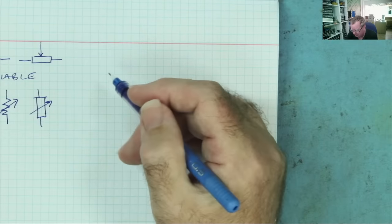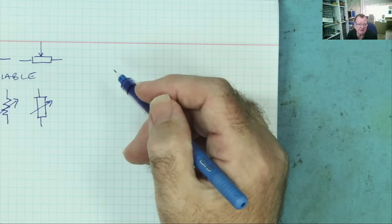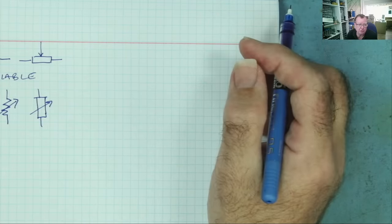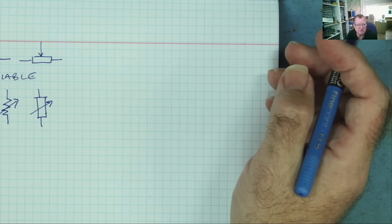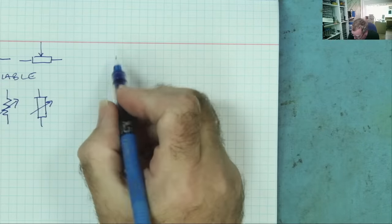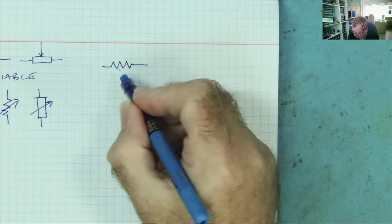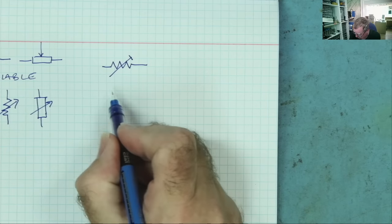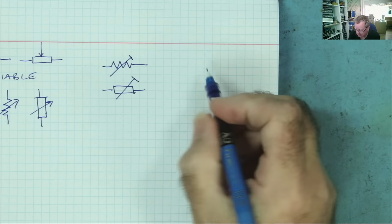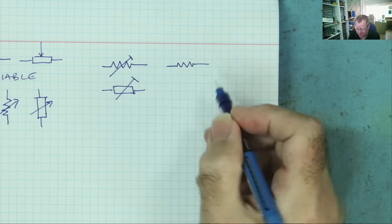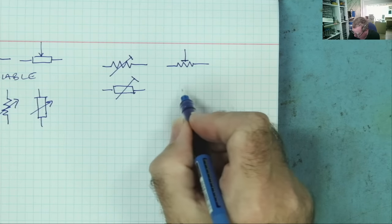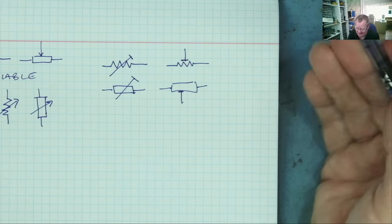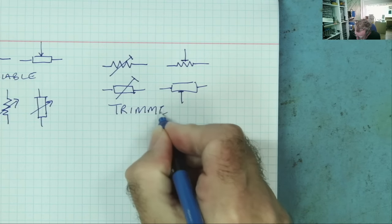There's also a variation on the variable resistor called a preset or trimmer potentiometer — trimmer pot. These are the little ones you find on circuit boards that you adjust with a screwdriver. They're not meant to be continually adjusted by the operator; they are meant for setting the circuit up and then leaving them in position. They have a similar symbol to the variable resistor — often drawn with what looks like a long letter T through it. This component is usually called a trimmer or trimmer pot.